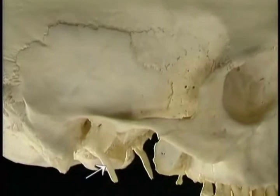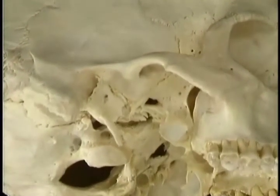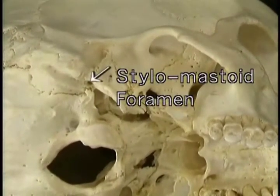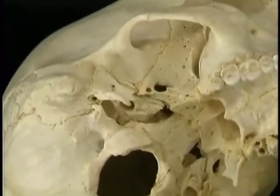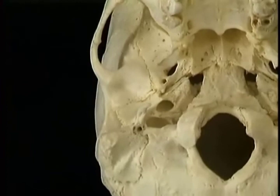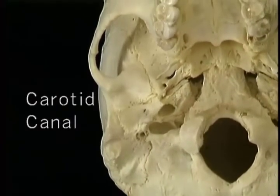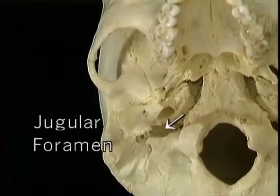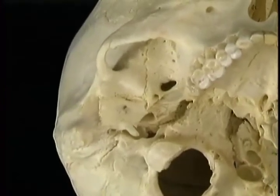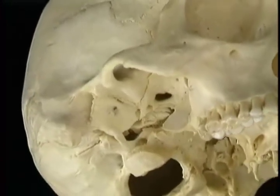This long sharp projection is the styloid process. Just at the base of the styloid is the little stylomastoid foramen for the facial nerve. Medial to the styloid process are two major openings for blood vessels: the carotid canal passing forwards for the internal carotid artery, and the jugular foramen passing backwards for the internal jugular vein. Just above the occipital condyle is the hypoglossal canal for the hypoglossal nerve.